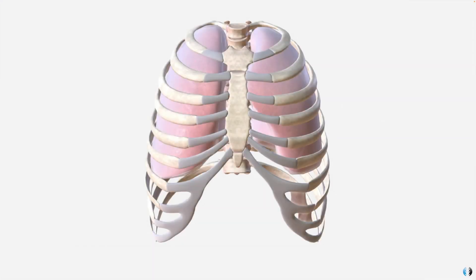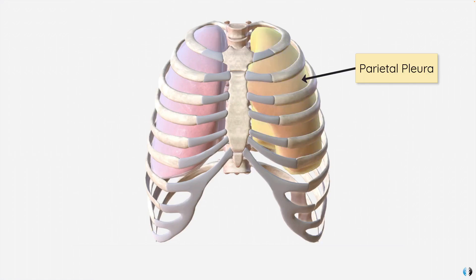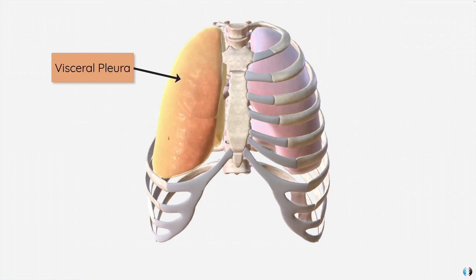Now if we consider our lung tissue anatomy — between the lung tissue and the thoracic cage where our ribs are located is where we find the pleural linings. We have the parietal pleura, which is a lining that attaches to the ribs, and we have the visceral pleura, which is a lining that attaches to the lungs.